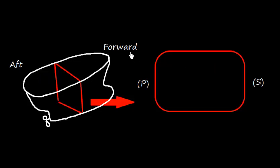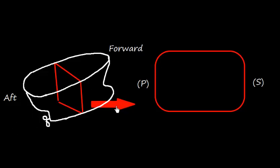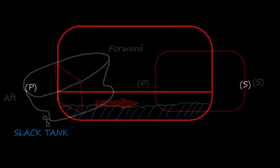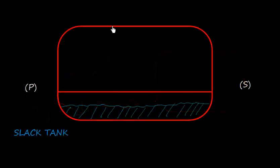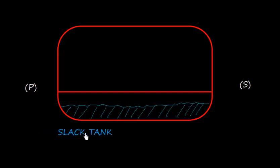Now let us consider this vessel — this is the forward part and this one is the aft part, and we are looking at the ship in the transverse direction. We look at the ship from aft and this is the transverse area. It can be represented like this: this is the starboard side and this is the port side. Let me amplify this — suppose this is a tank, and this tank is a slack tank, which simply means that the tank is partly filled.